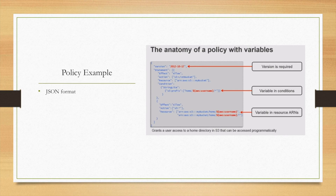Here is a policy example. The policy uses JSON format. We can see that it first defines the version, which is a required field, and also has a statement. The statement tells us the effect — allow or deny — what actions, which resources to request, and also conditions. The conditions part is very important and will help you increase your security, as it can restrict certain requests to only access certain resources.